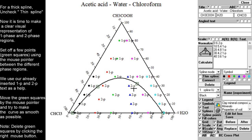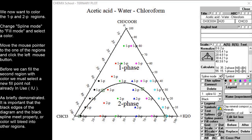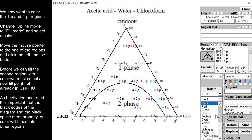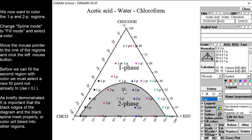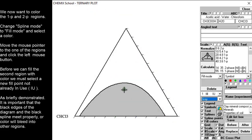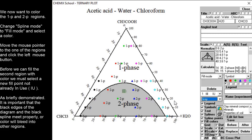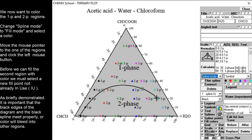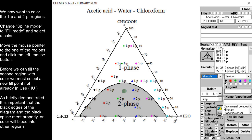It is time to colorize both regions, but first we have to change from spline mode to fill mode. After a color has been selected, we can colorize the two phase region by left clicking the mouse. It is possible to move the fill point with the mouse. It is important that the black edges of the diagram overlap with the spline or color will bleed into other regions. We now have to select a fill point that is not already in use. Select fill point number 2 and a color.